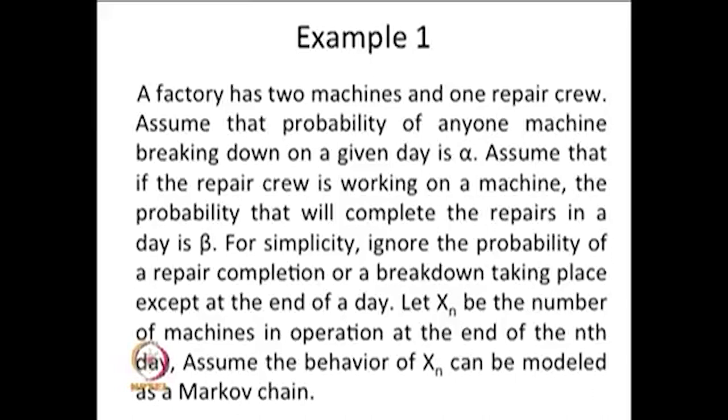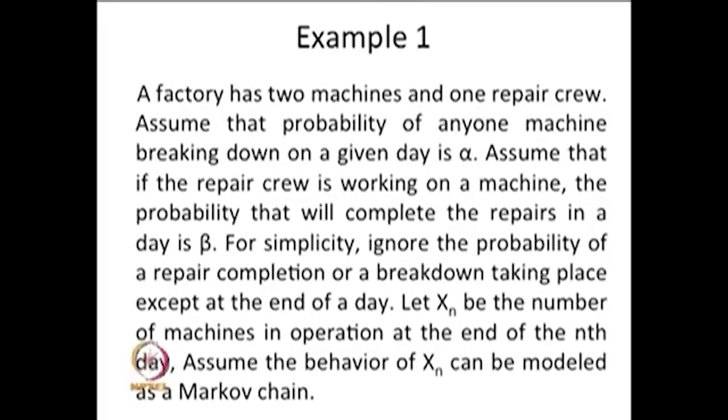I am going to explain the discrete time Markov chain with three simple examples. The first example is as follows: a factory has two machines and one repair crew.